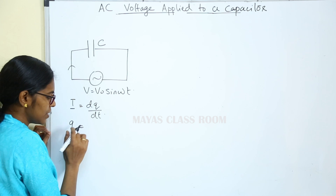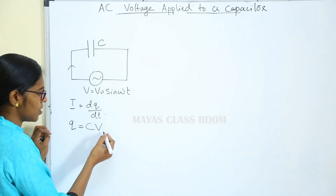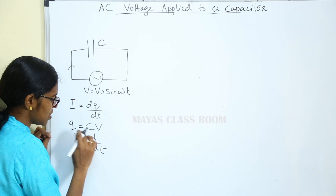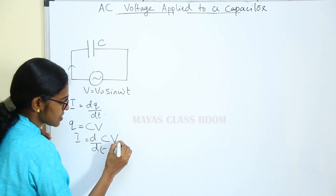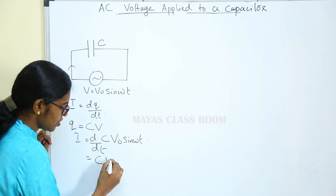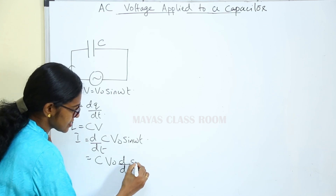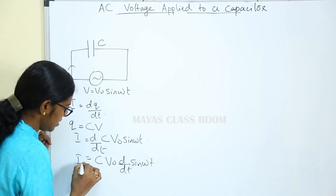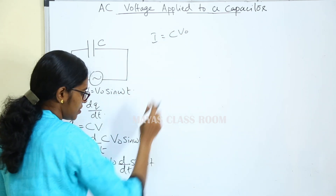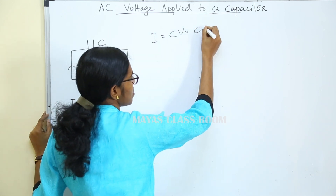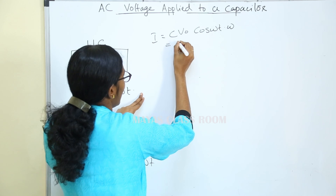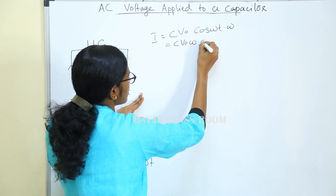I must be equal to dQ/dt. Since C is constant and V0 is constant, we get C into V0 into d/dt of sin(ωt). Then I is equal to C into d/dt of cos(ωt) into ω. That is equal to CV0ω cos(ωt).